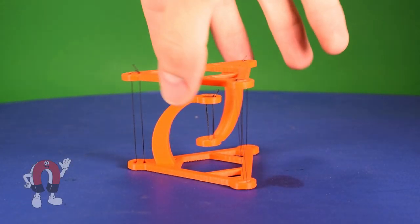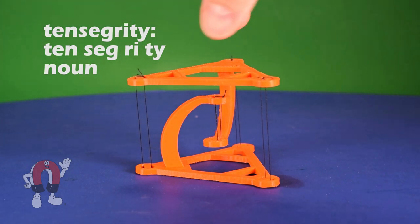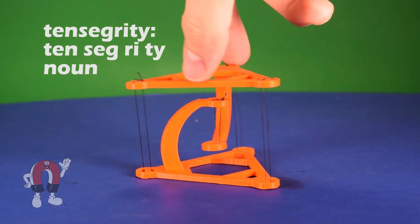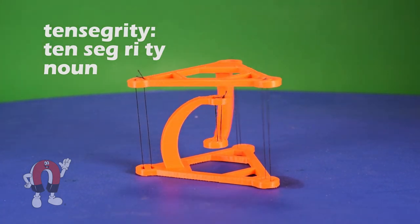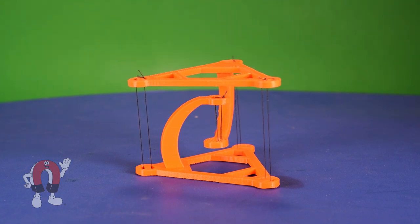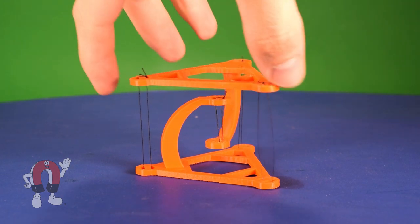This is a tensegrity table. This unique structure uses a series of strings in tension to hold a tabletop in an elevated position. It looks like it's somehow floating.